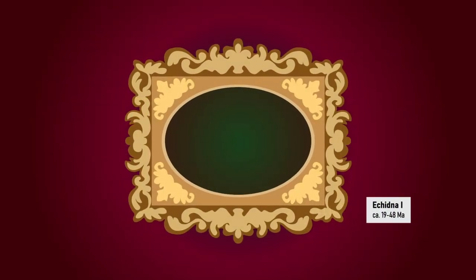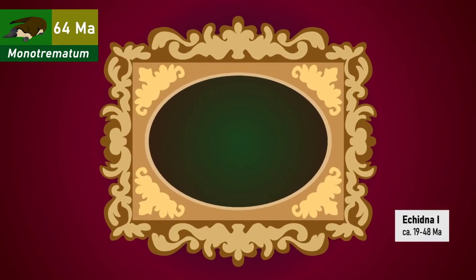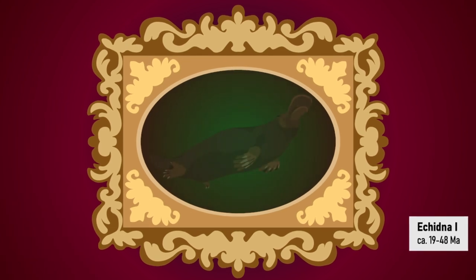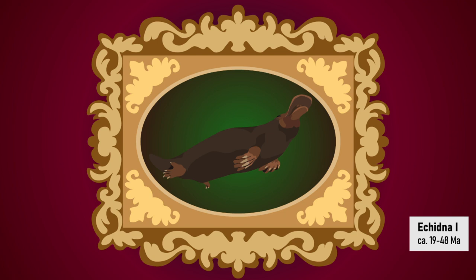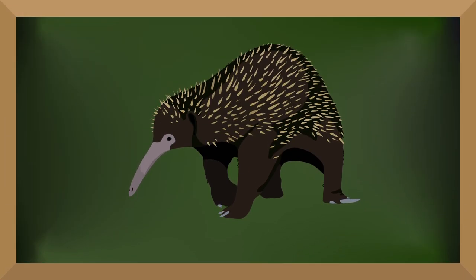Importantly, the platypus-like Monotrematum predates this point by at least 10 million years, suggesting that the ancestor of echidnas resembled a platypus too. Instead of representing a long-lost lineage of primitive mammals unchanged for millennia, this would mean that echidnas would probably better be thought of as a rather new and highly specialized form of platypus.